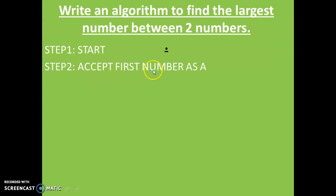Then you have to accept two numbers. So in step two, accept first number, accept first number as A. So you take first number and store it in A.